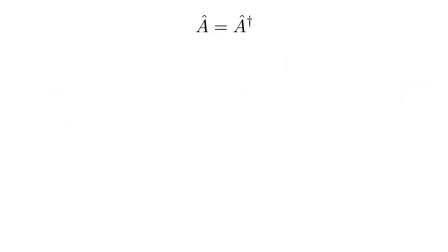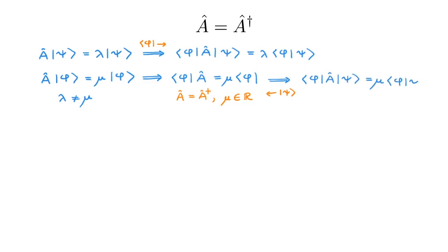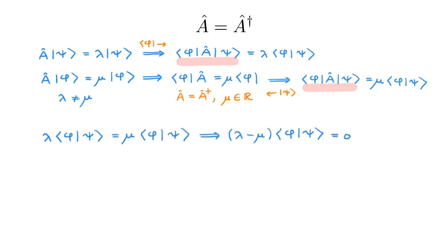Let's now move to eigenstates. We consider the first eigenstate psi with eigenvalue lambda and the second eigenstate phi with eigenvalue mu, where lambda and mu are different eigenvalues. We operate with the bra phi on the first eigenvalue equation. For the second equation we transform it to the dual space — since A is Hermitian we don't need the dagger, and since mu is real we don't need the complex conjugate. We then operate with the ket psi. Equating the left-hand sides gives us that if lambda differs from mu, the bracket between phi and psi must be zero — therefore eigenstates corresponding to different eigenvalues are orthogonal.